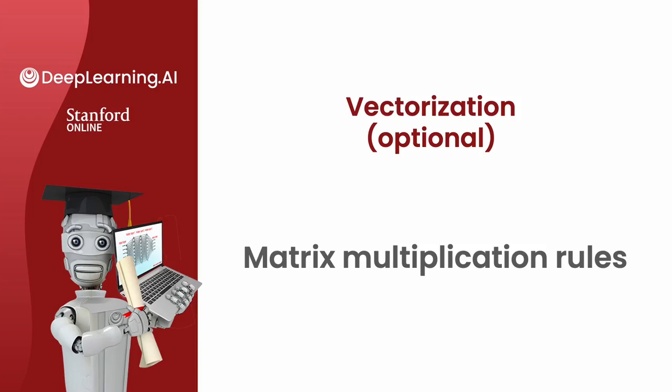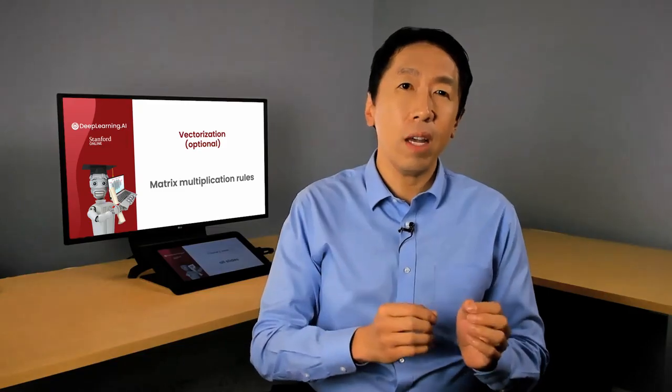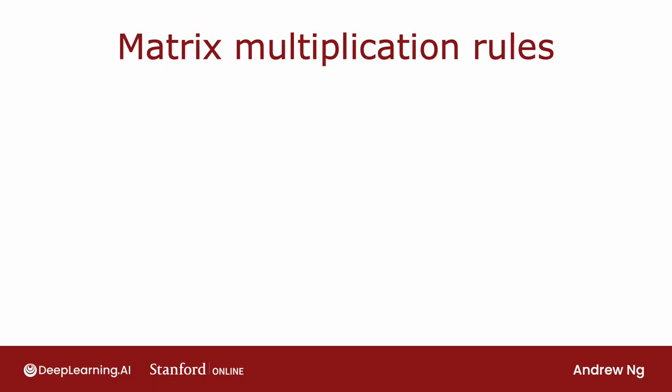Let's take a look at the general form of how you multiply two matrices together. And then in the last video after this one, we'll take this and apply it to the vectorized implementation of a neural network. Let's dive in.